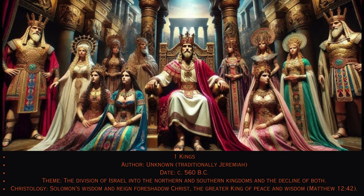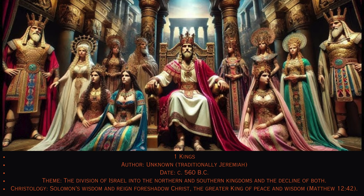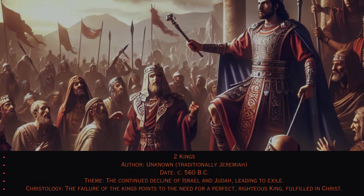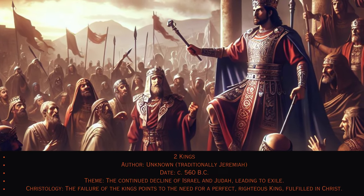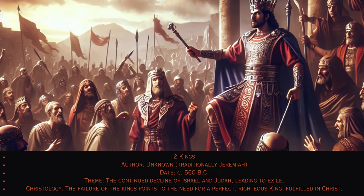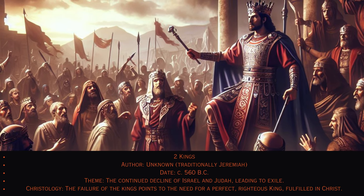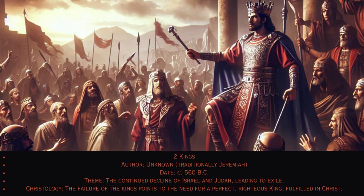12. 2 Kings. Author: Unknown, traditionally Jeremiah, circa 560 B.C. Theme: The continued decline of Israel and Judah, leading to exile. Christology: The failure of the kings points to the need for a perfect, righteous king, fulfilled in Christ.